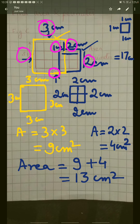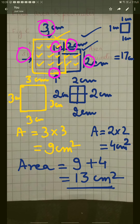The area of this figure is 13 centimeter square, which means 13 squares of side 1 centimeter can fill this area. You can count them: 1, 2, 3, 4, 5, 6, 7, 8, 9, 10, 11, 12, 13. So 13 squares of side 1 centimeter can fill this area.